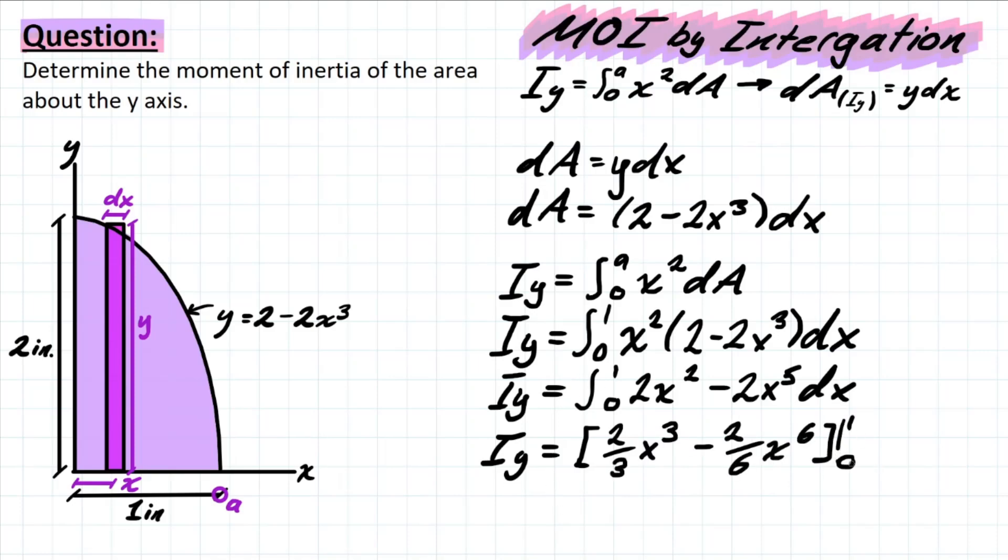All right, so now we have a definite solution for this problem. All we have to do is go ahead and plug in our values. So we have a, which was equal to 1, and 0 as the other term, meaning that when we plug in 1, all of these terms are simply going to be just that coefficient at the front. So we have 2 over 3 minus 2 over 6. That's going to leave you with 0.33 inches to the power of 4.